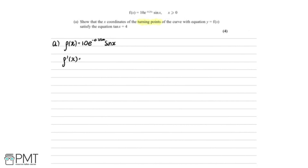Firstly, we differentiate the exponential part. Because we're working with an exponential, we multiply down the power: minus 0.25, then multiply everything as it is — so that gives minus 0.25 multiplied by 10e^(−0.25x). Then using the product rule — differentiate, hold; differentiate, hold — we hold sin(x). Then adding on, we differentiate sin(x) to get cos(x), and hold the other part, which is 10e^(−0.25x).